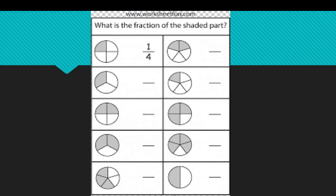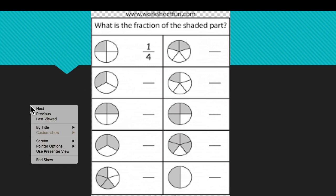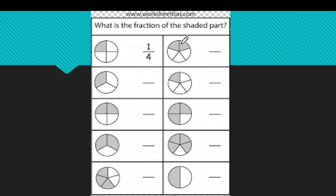Let's practice writing fractions, just quickly and orally. Four parts make up the circle; only one is shaded. We write it one out of four — one-fourth. What about here? Count how many parts in all: one, two, three, four, five. Write number five at the bottom. How many are shaded? One, two — two out of five are shaded. Is this a unit fraction? No, it is not, because it has number two on the top, not number one. Only a fraction with number one on top is a unit fraction.